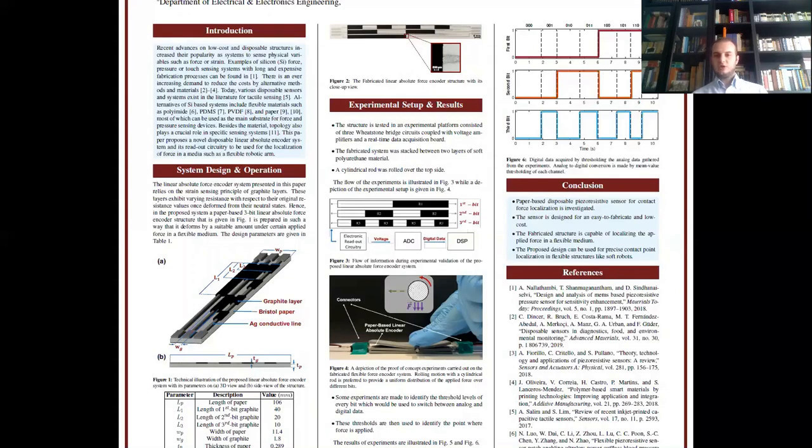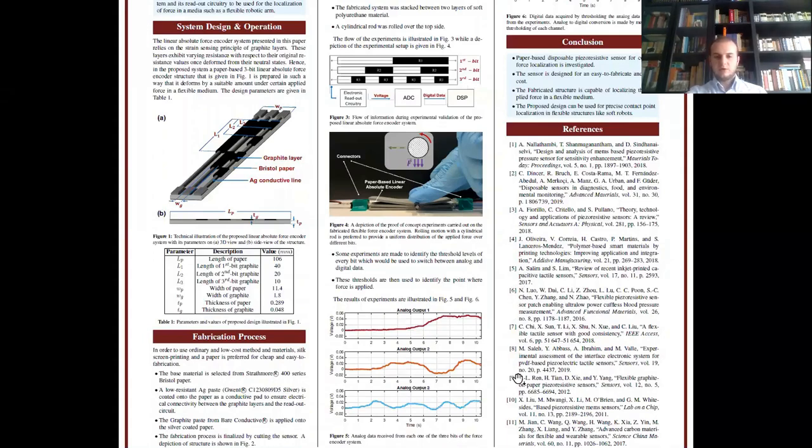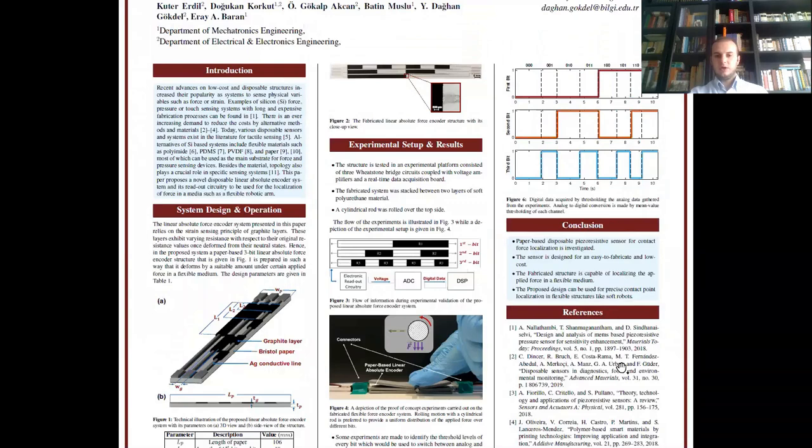This resistance change creates a voltage change in the readout circuit. This change, that is, analog data is read with real-time controller, then the processor converts into the digital data according to the threshold levels. These threshold levels are then used to identify and localize the point force and segments. You can see that in figure five, the analog data received from each bit of three bits of the force encoder system and its digital data in figure six.